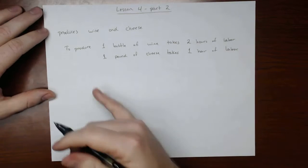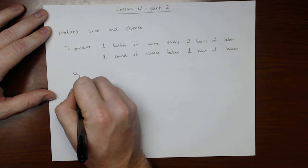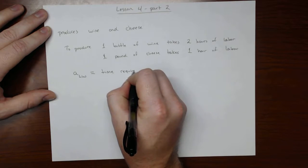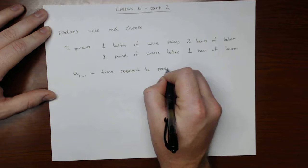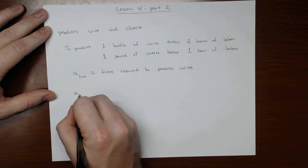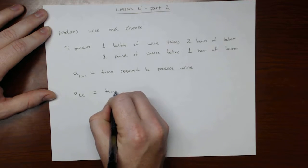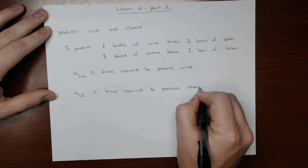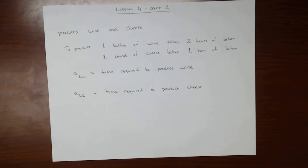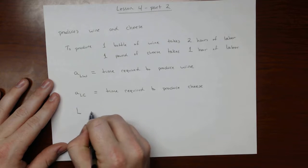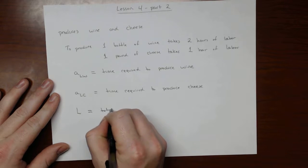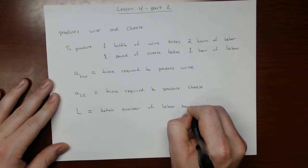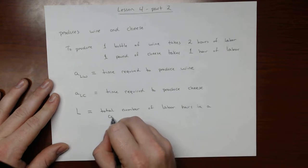So we can define some terms. Let's call them ALW is the time required to produce wine, and ALC is the time required to produce cheese. And then let's also define another term, L is the total number of labor hours in a country.